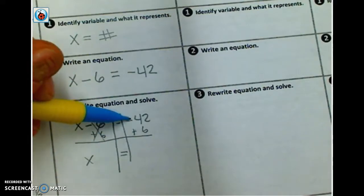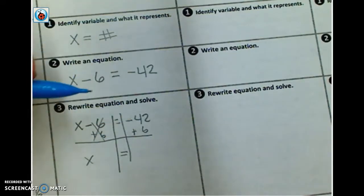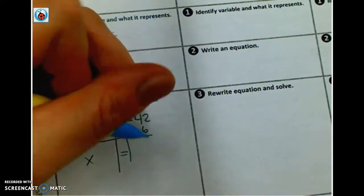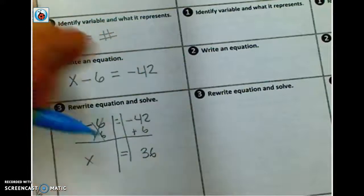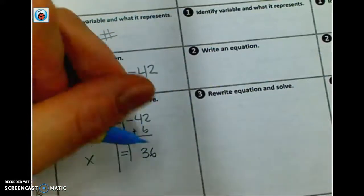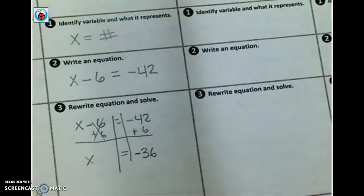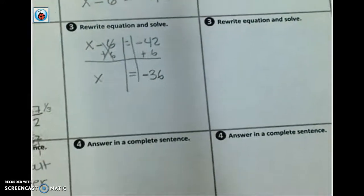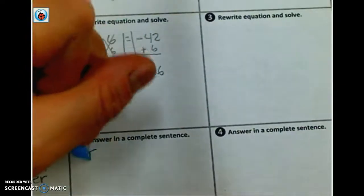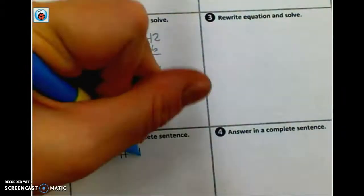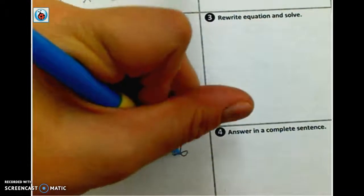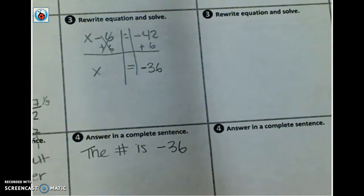Not much for putting it into a sentence here. You just have to tell me that the number is negative 36. And that's it. So what I'd like you to do is to go ahead and try numbers 7 and 8 on your own. So that way we can pick up on Monday, or whenever we happen to return and meet, and discuss them from there.